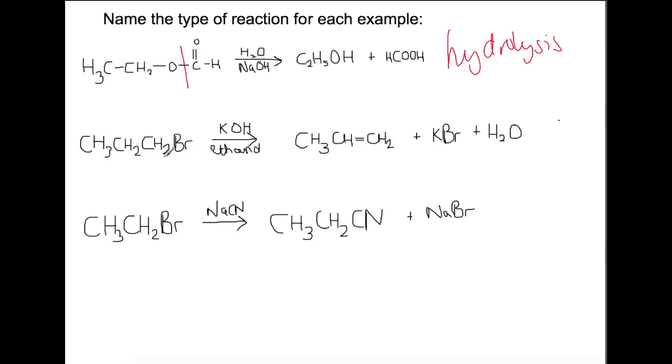For this example here, we started off with this molecule where we have a halogen attached. We're doing this with KOH and ethanol. And if we do this in ethanol, you can see that we end up with a double bond and we've got H2O and KBr. So we've actually taken away an H and a Br from this molecule. So this is an elimination reaction.